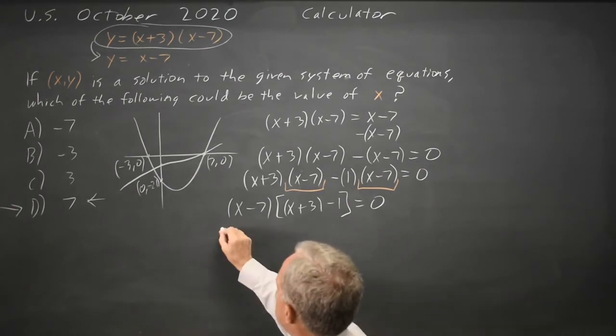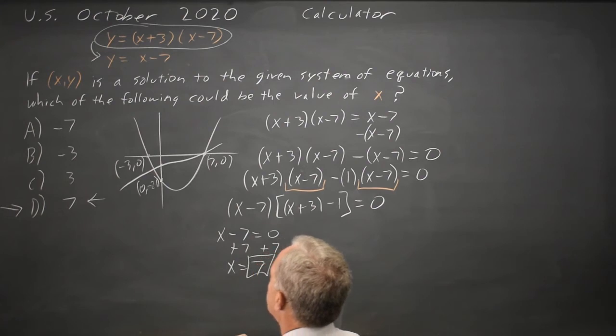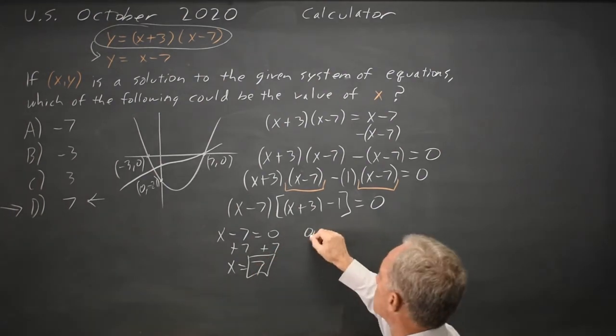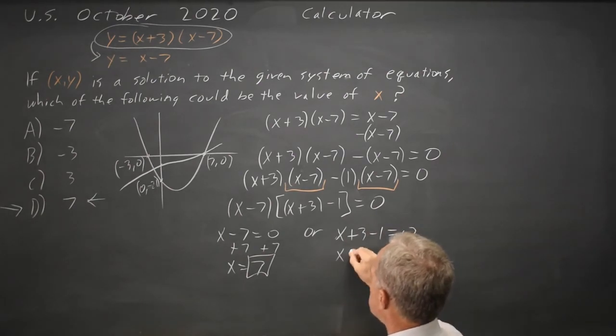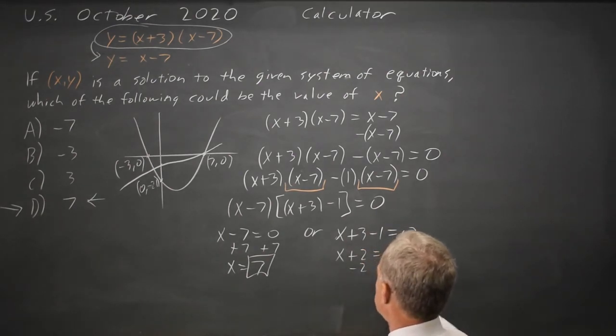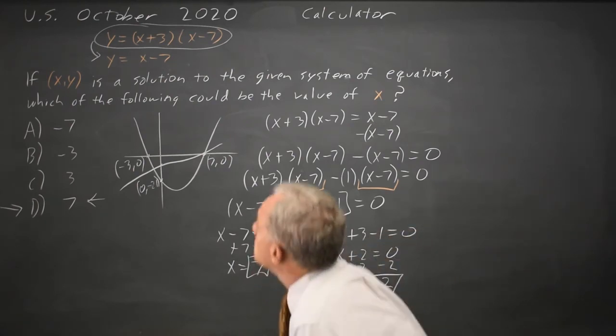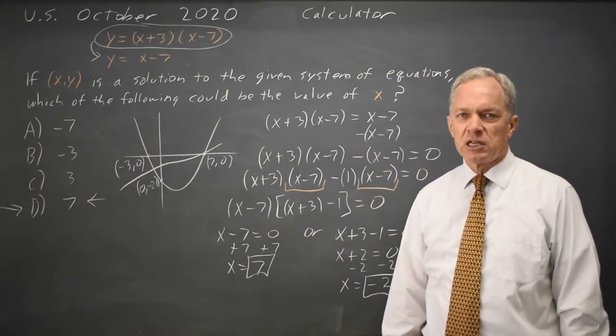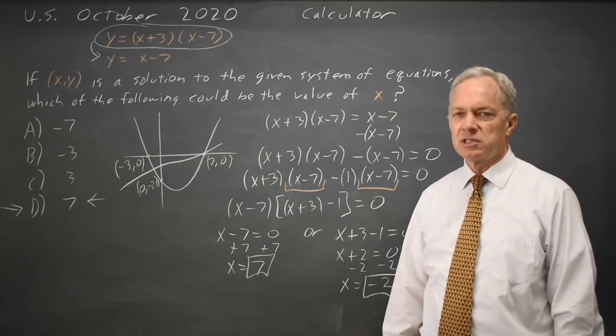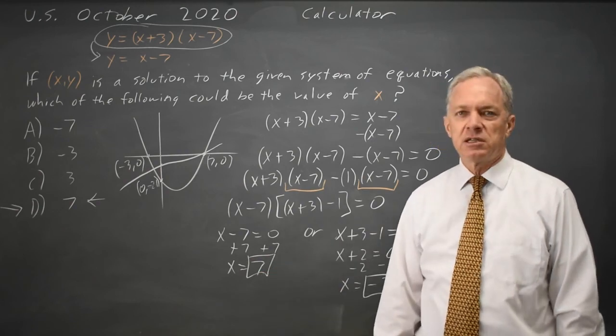So if I have a product that equals 0, either the first factor is 0, x minus 7 equals 0, add 7 to both sides, and I get x equals 7, which is the answer I already found, or the second factor is 0, x plus 3 minus 1 equals 0. That's x plus 2 equals 0. If I subtract 2 from both sides, I get x equals negative 2. That is a correct value, possible value of x for a solution. However, it's not one of the answer choices, so I can't use that solution. The only answer is choice D, x equals 7.